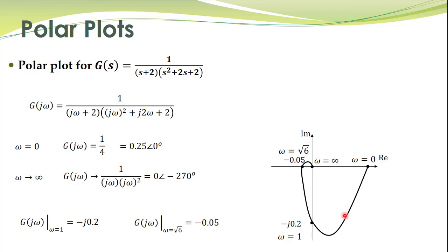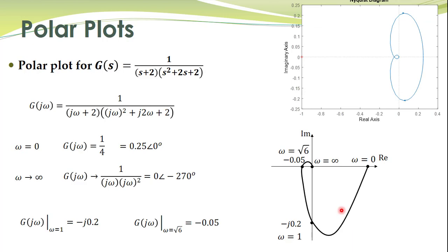More accurate polar plots can be obtained using software tools. Here is the Nyquist plot of the same transfer function — in the next lecture we will learn that this half of the Nyquist plot is essentially the polar plot. This more accurate shape is obtained using software, compared to our hand sketch based on a few key points.